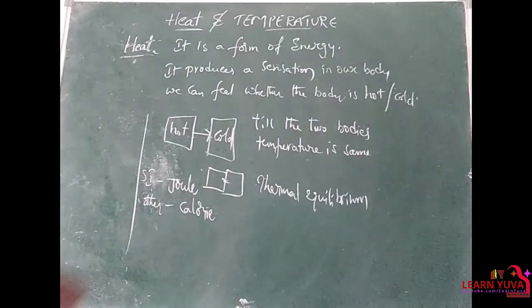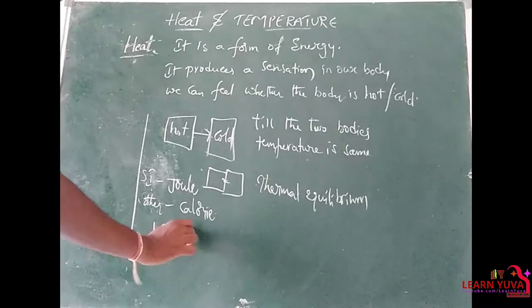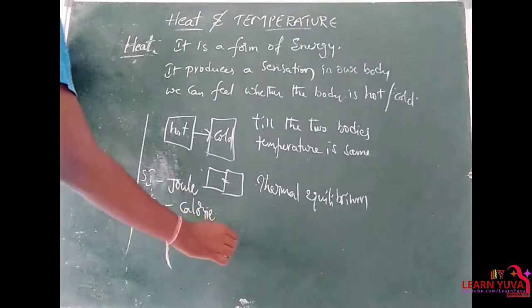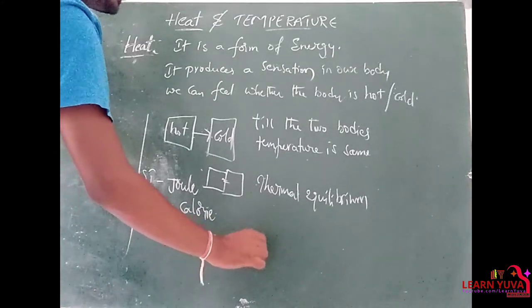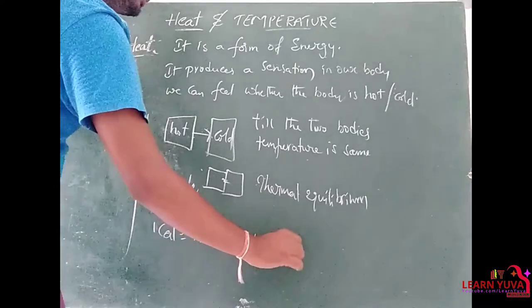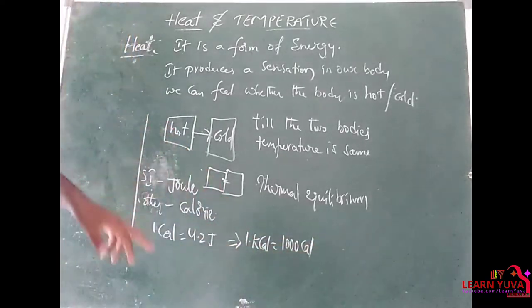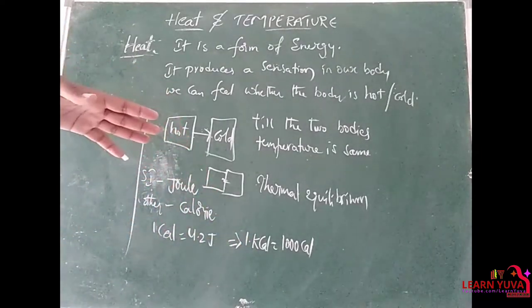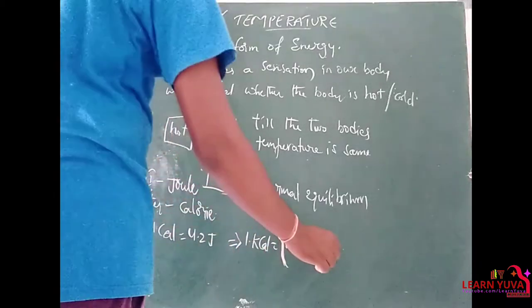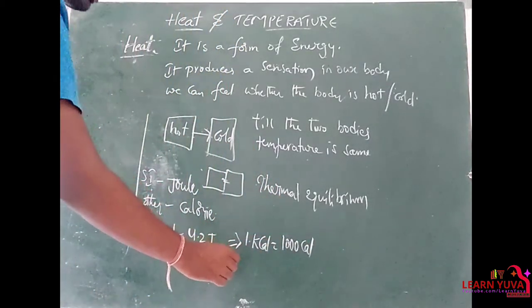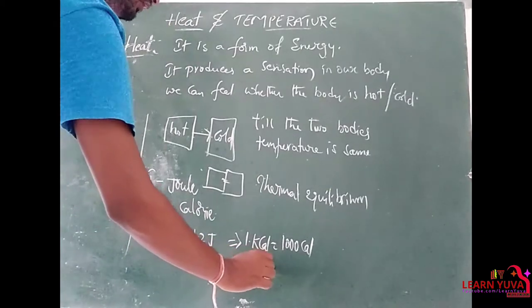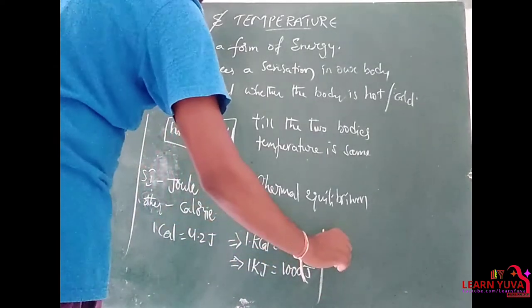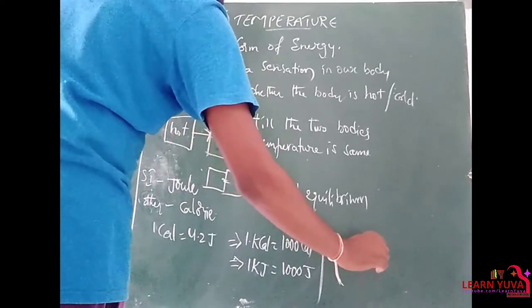One calorie is equal to 4.2 joules, and one kilocalorie is equal to 1000 calories. One kilojoule is equal to 1000 joules, and one joule is equal to 10 to the power of 7 ergs in CGS terms.